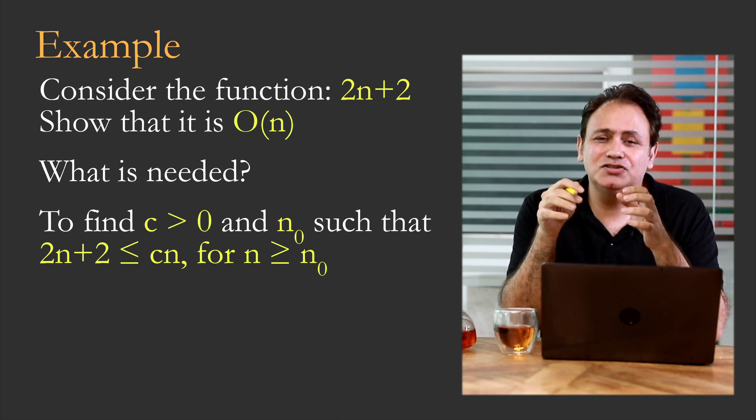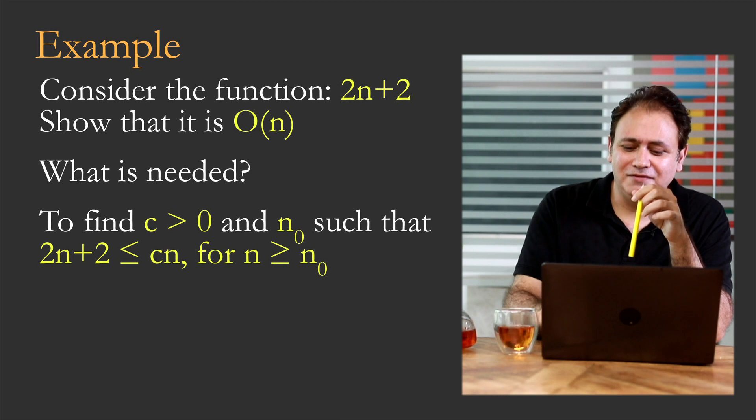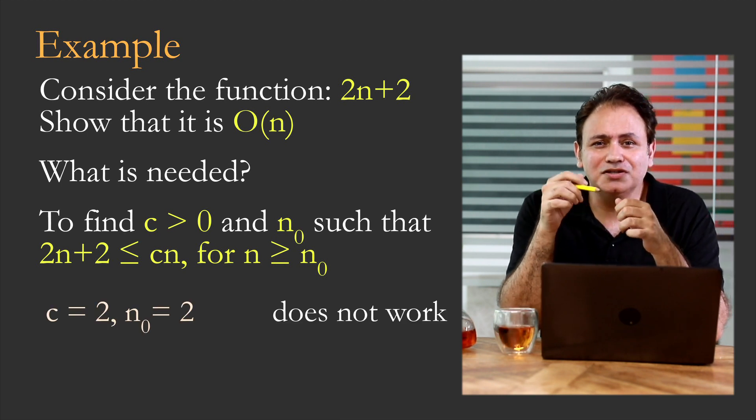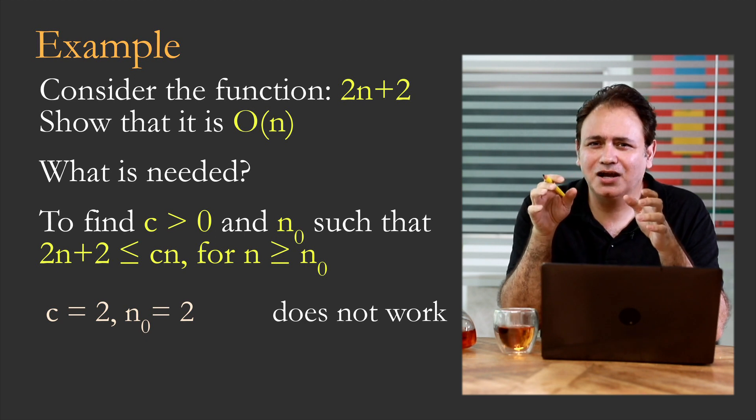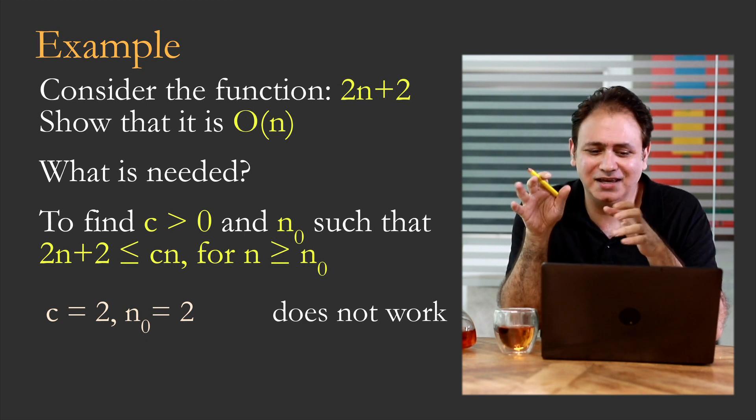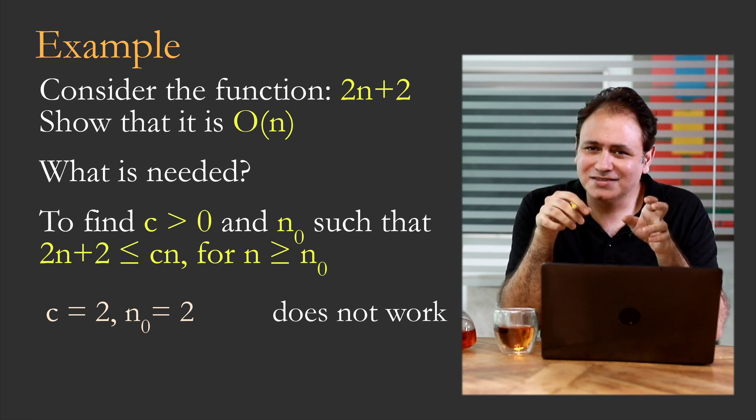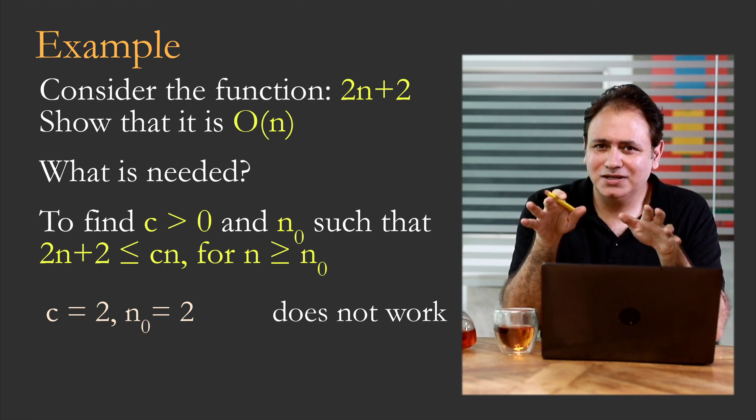So what we can essentially do is actually plug in some numerical values. So assume that you have c equals 2 and n₀ equals 2. You can quickly work out that it doesn't work because the right-hand side is c times n, so that would be 2 times 2 is 4. The left-hand side would be 6. So it doesn't work.